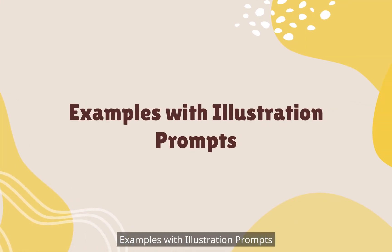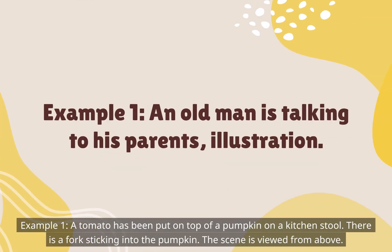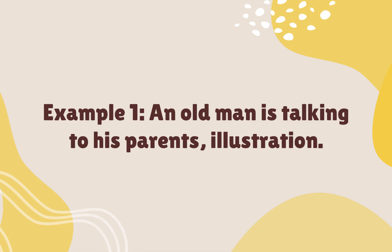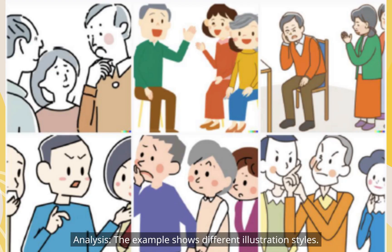Illustration prompt Example 1: A tomato has been put on top of a pumpkin on a kitchen stool. There is a fork sticking into the pumpkin. The scene is viewed from above. The example shows different illustration styles. However, the role — the old man — and social relations are wrong.